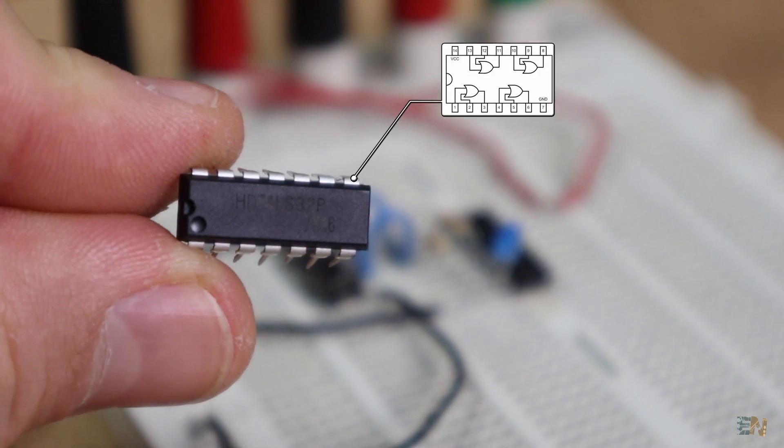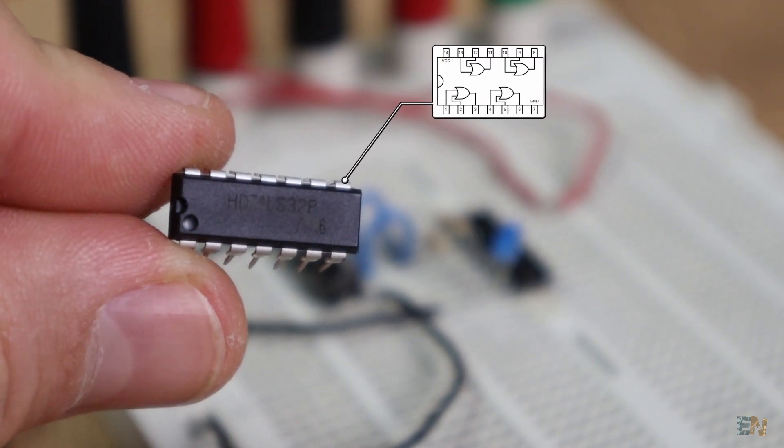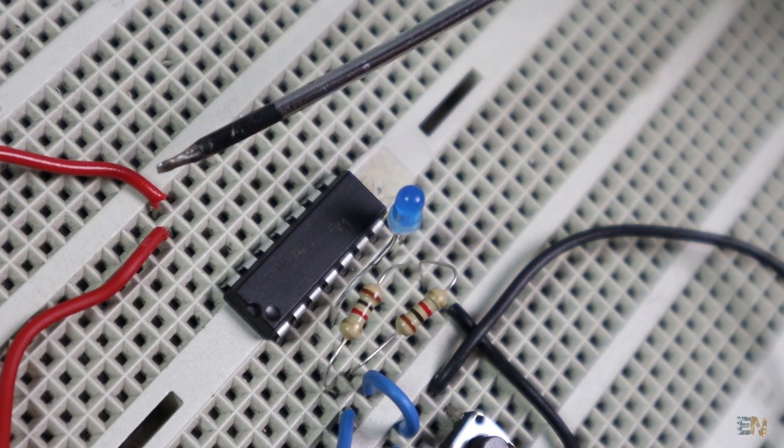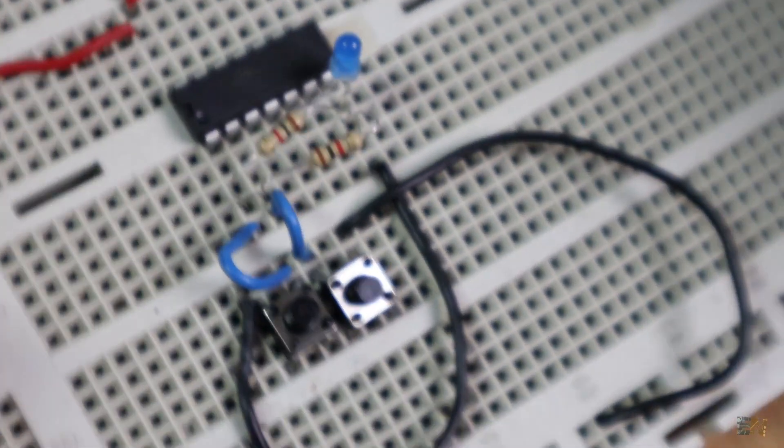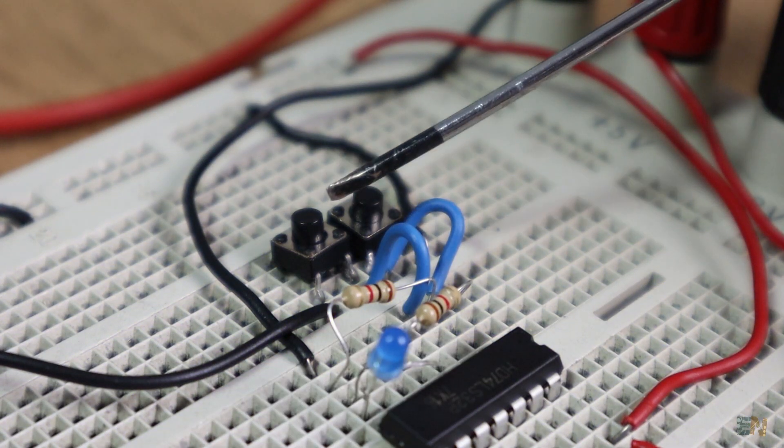So for this example, I've used the 74LS32 chip that has 4 OR gates. Supply 5 volts and ground and add the push button at the input just as in the other examples. Anytime one of the inputs is pressed, the output is high.